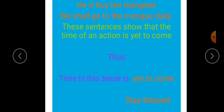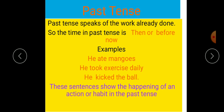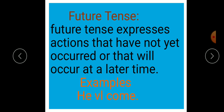Okay, dear kids, in this way we can say in future tense the time is yet to come. Clear? My dear kids, once again, past tense speaks of the work already done. Wo kaam jo hoa hai, wusi ko past tense kaha jata hai. The time in past tense is then or before now. Jo kaam hoa hai, wusi ko past tense kaha jata hai.